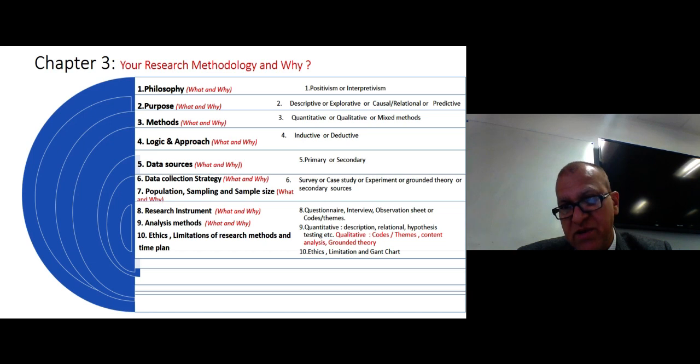Data sources could be primary or secondary sources. Data collection strategy could look at the same range of things like survey, case studies, experiment, grounded theory, or secondary sources. Population is the whole of the target people you are asking questions, and sampling is a part of that. And then sample size, so are you using probability sampling or non-probability sampling and the sample size?